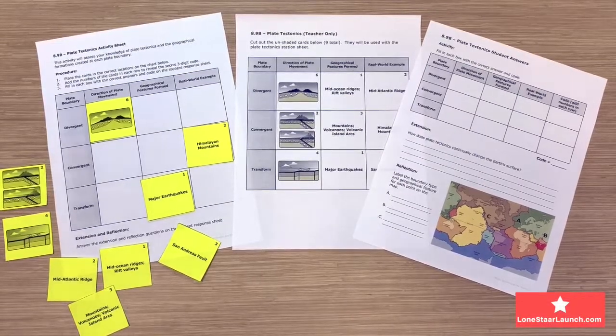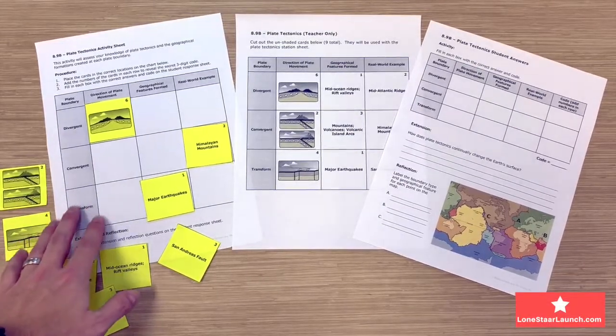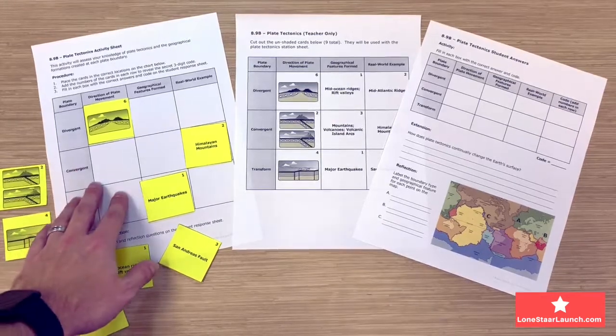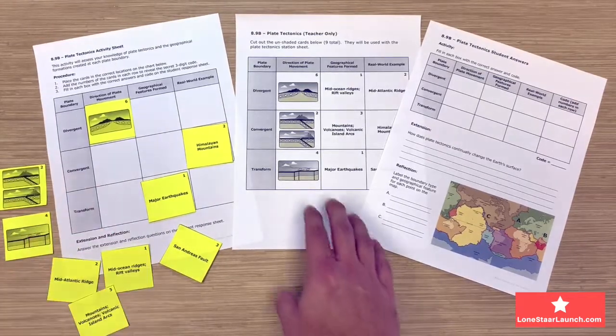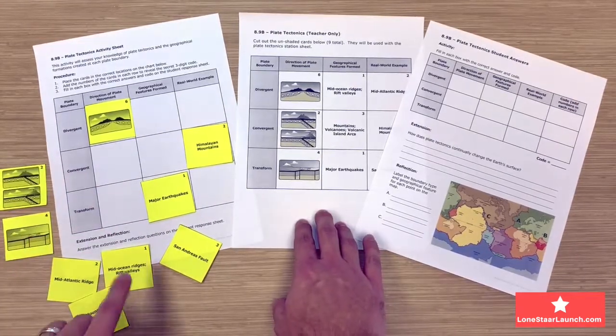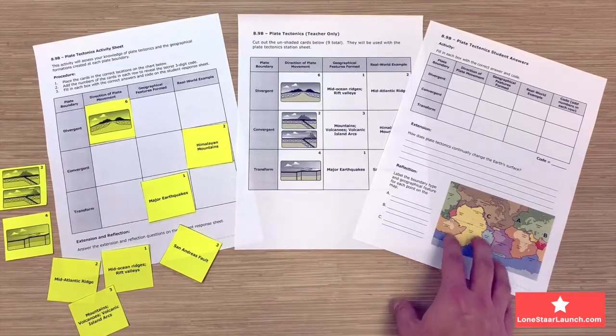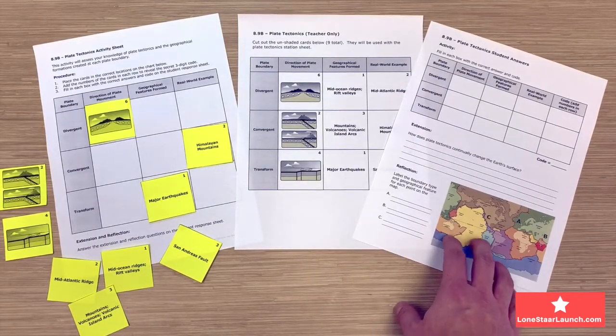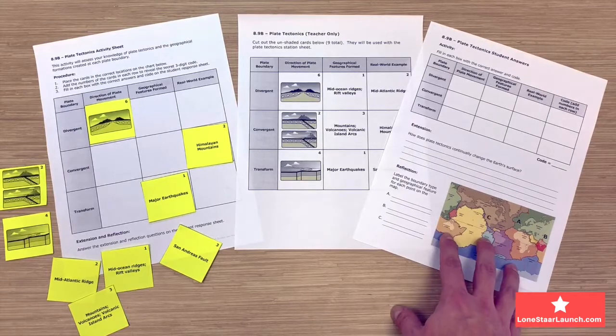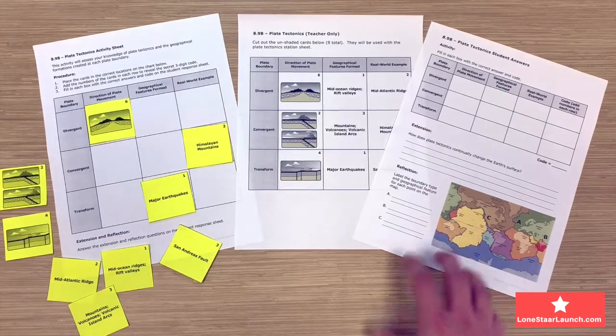This is the plate tectonic station for TEKS 8.9B. We have three sheets here. The first sheet is the station sheet, the second one is the teacher only page where you're going to get those yellow cards from, and the third one is the student response sheet where students are going to write their answers on this page and take it from station to station.